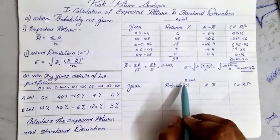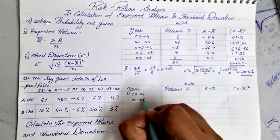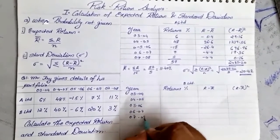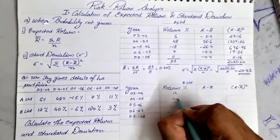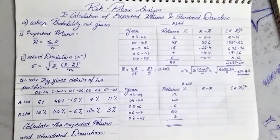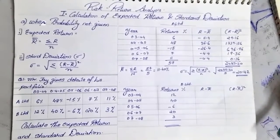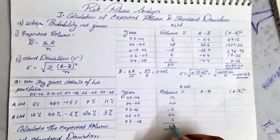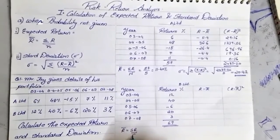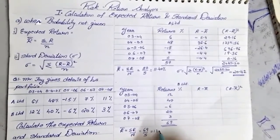Similarly we will now do for B Limited. The years are again 2003–2004, 2004–2005, 2005–2006, 2006–2007, and 2007–2008. Under returns we note down 12, 40, negative 6, 20, and 3. When we add up the values — 12 + 40 + 20 + 3 − 6 — the total comes to 69. We need to find r̄ (expected return), which is the total of r divided by n, so 69 divided by 5, which comes to 13.8.